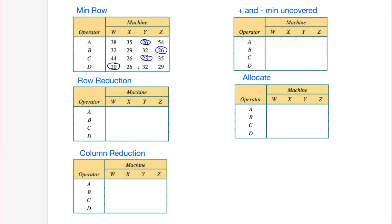The first thing we do is what I'd call row reduction - we subtract the minimums from each row. So we subtract 26, 26, 23, and 20 from their respective rows and put the answers down. Subtracting 26 from the first row gives us 12, then 9, then a zero wherever the minimum occurred - 26 minus 26 - and then 54 take away 26 is 28.